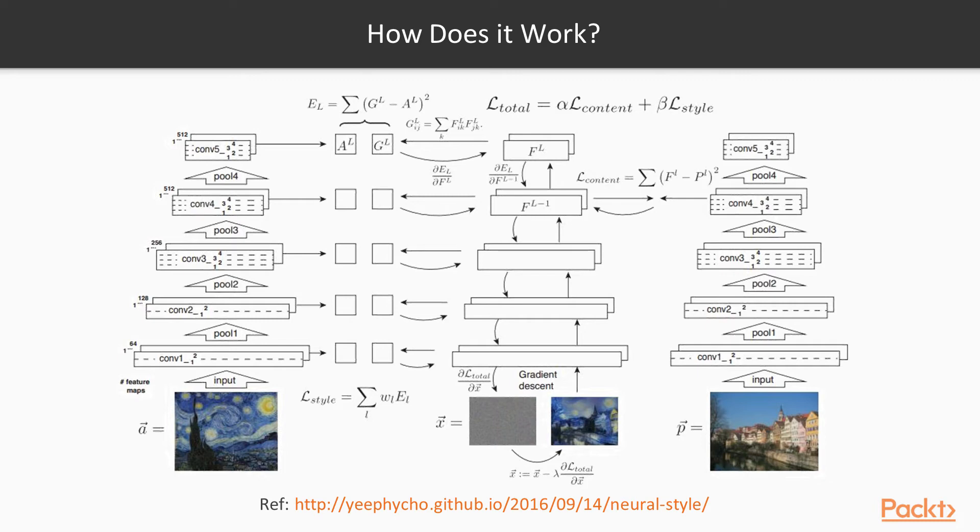So you take your VGG, train it on ImageNet or you download the weights somewhere. You run your content image through VGG. You get your features and then you do the same for the style image. You run through VGG and then you compute the correlations of the features. That will give you your style feature.